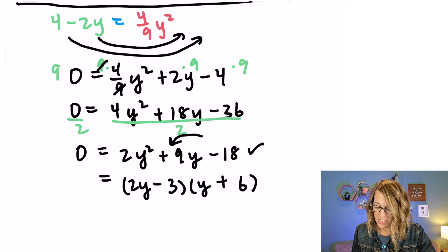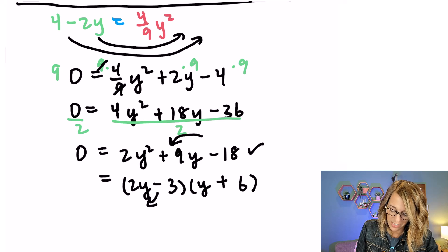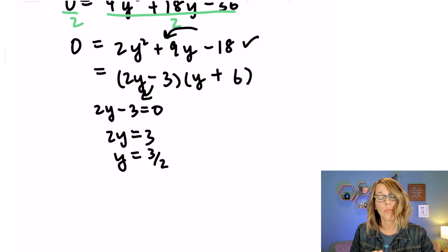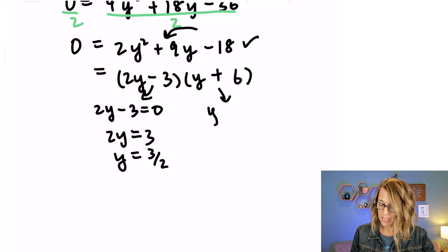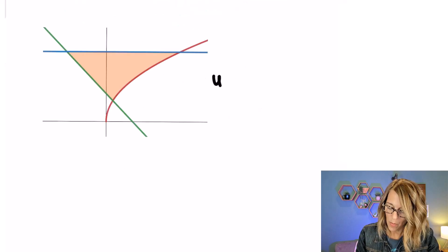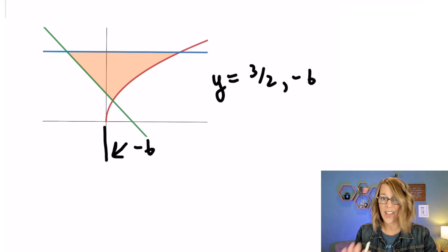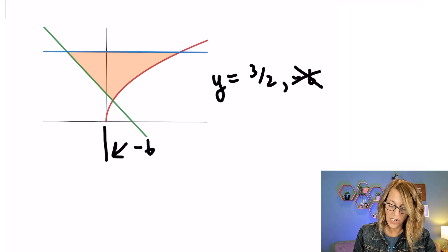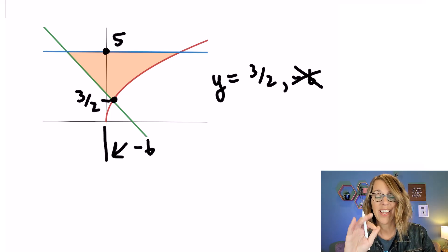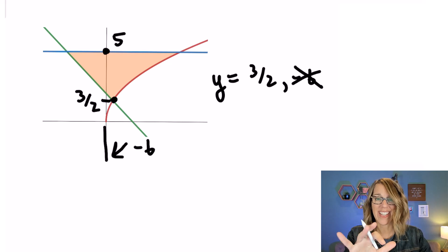I end up with two possible solutions. Setting 2y minus 3 equal to 0 gives y equals 3 halves. The other factor gives y plus 6 equals 0, so y equals negative 6. Going back to look at the curve, negative 6 would be way down below our region, so we cross that off. We know the upper y value is 5, so 3 halves must be our lower y value. That was a lot of work, but now I've got everything I need.